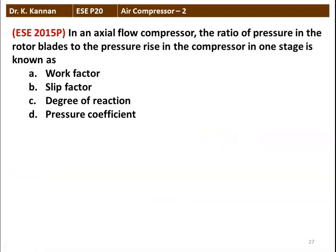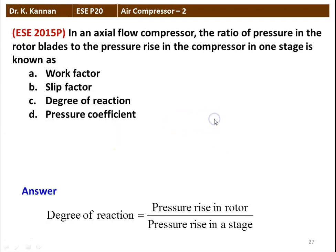The next question is from the 2015 question paper. In an axial flow compressor, the ratio of pressure rise in the rotor blade to the pressure rise in the compressor in one stage is known as work factor, slip factor, degree of reaction, or pressure coefficient. The correct answer is degree of reaction, defined as pressure rise in the rotor divided by pressure rise in the stage, which includes both the rotor and stator blades.